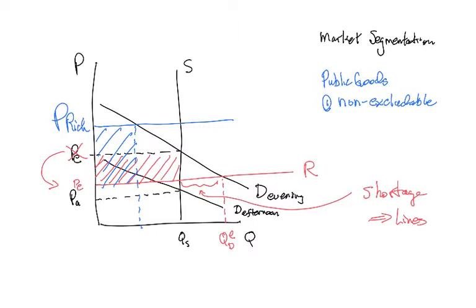I mean, it is a private good because of non-excludability. You can keep people from coming into your theater by simply charging them this ticket price. And if they don't pay, they don't get in.